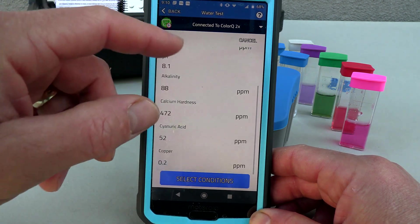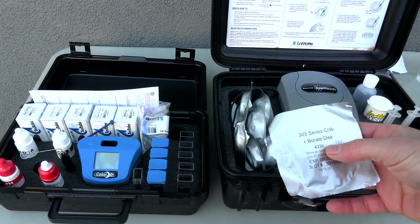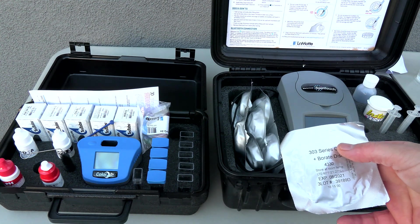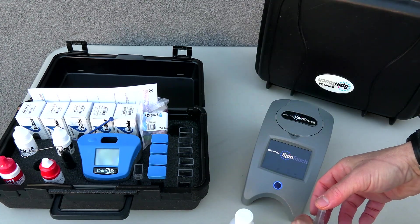I also have a LaMotte Spin Touch so what I'm going to do is run a test with the Spin Touch, then I'm going to compare the readings with the Color Q Pro 9 to show how accurate this photometer is. I'm using the same water sample for both tests.